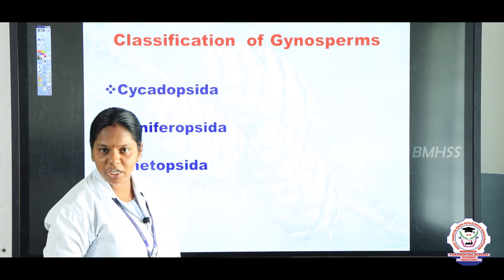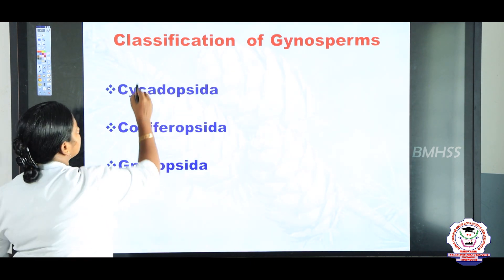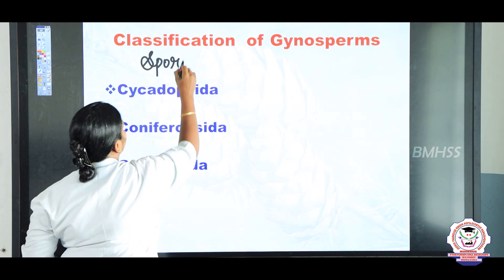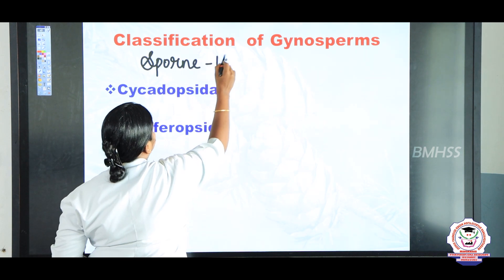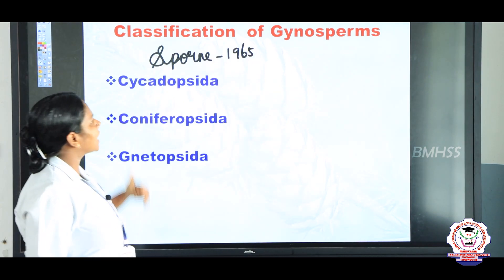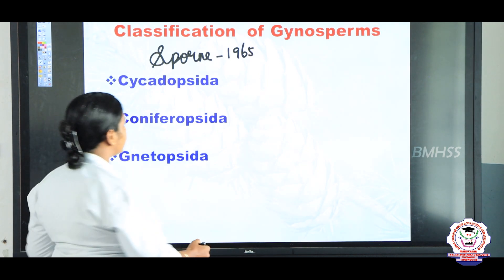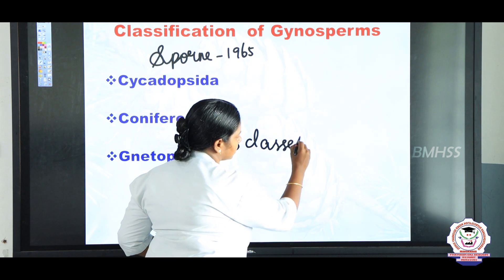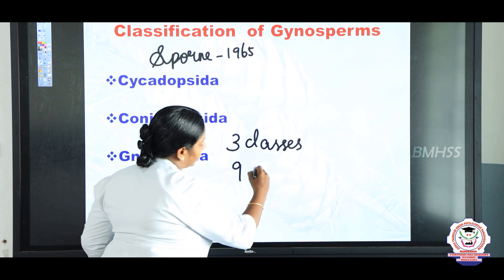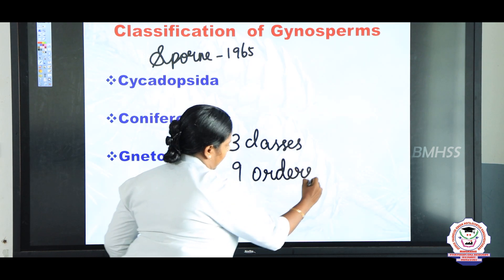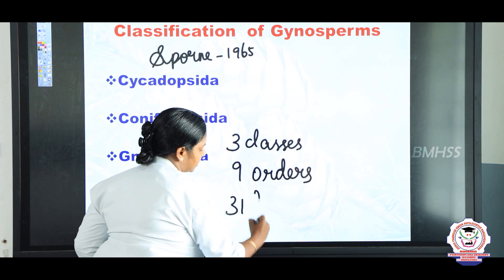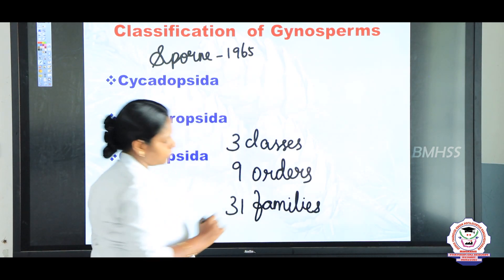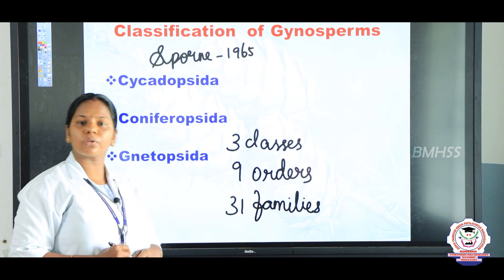Now we are going to see the classification of gymnosperms. The person named Sporne, in the year 1965, classified the gymnosperms into 3 classes, 9 orders, and 31 families. This is an important exam question.